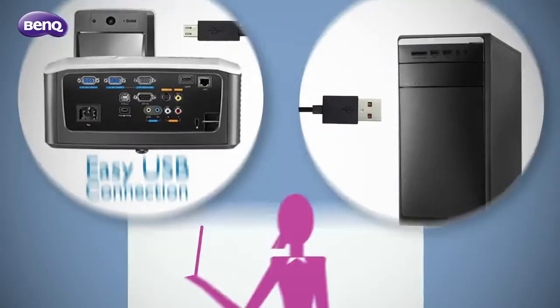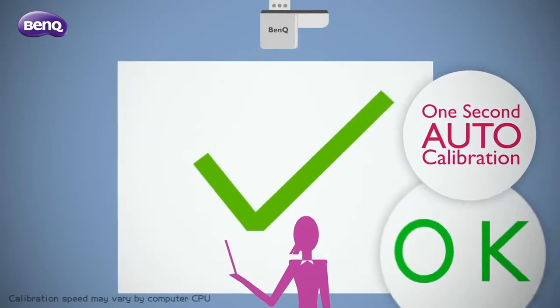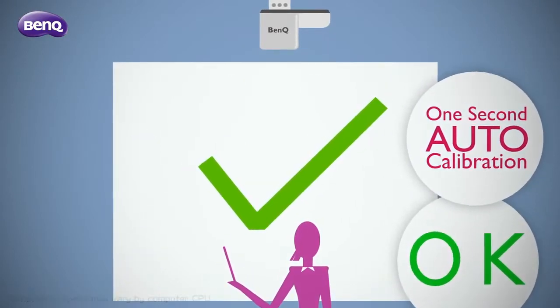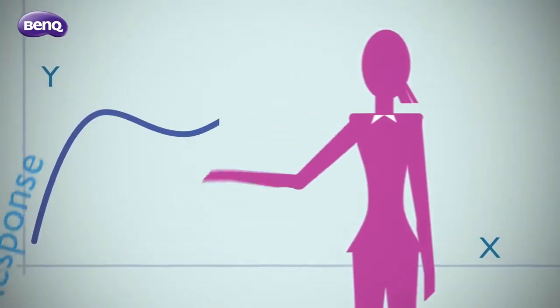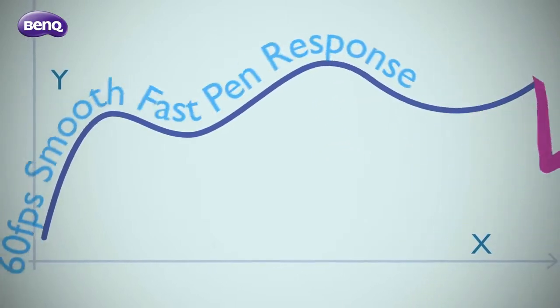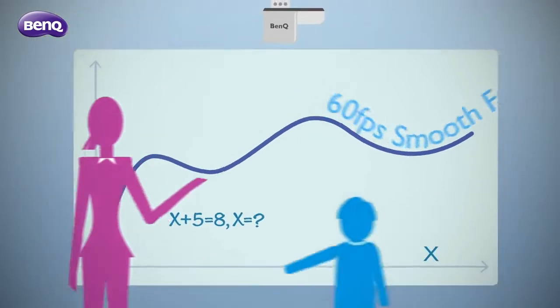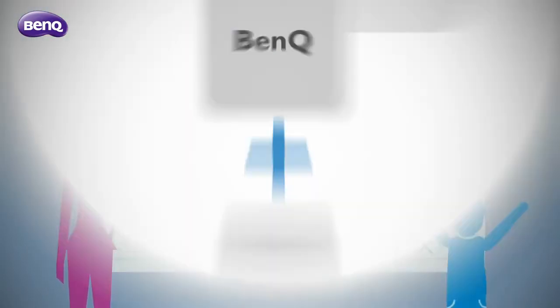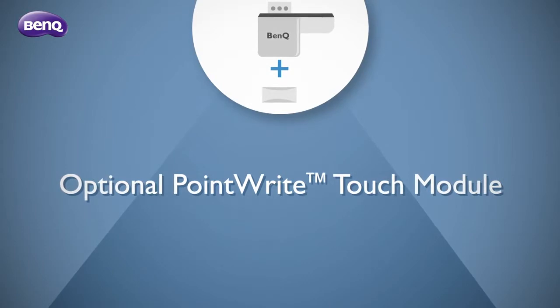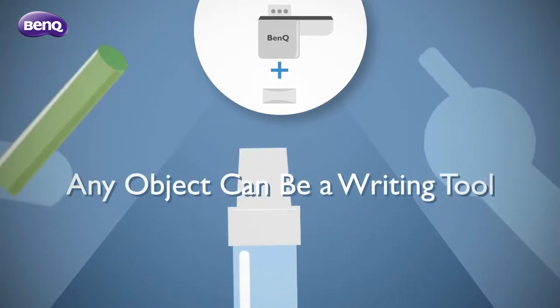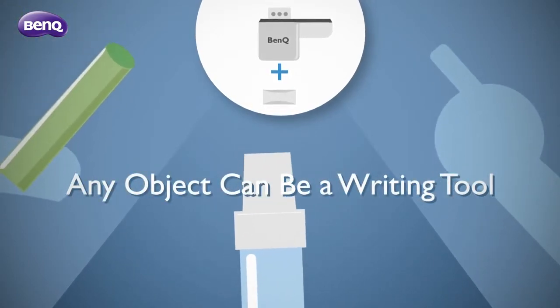All it takes is a few simple steps to implement flipped learning. Experience ultra-smooth writing with the PointWrite pen. With the optional PointWrite touch module, you can turn any object or your finger into a writing tool.